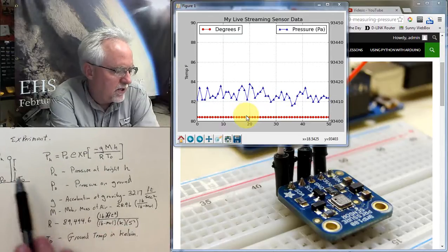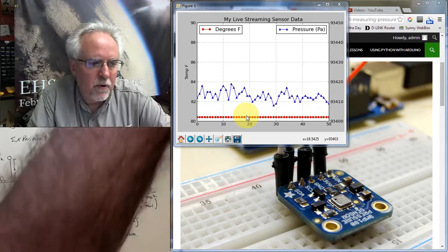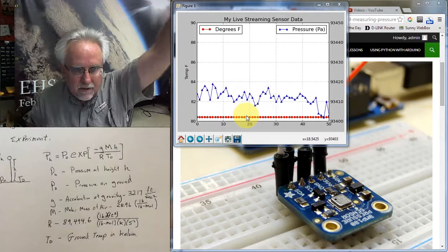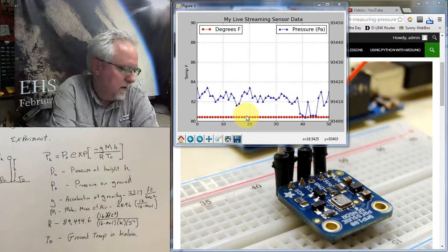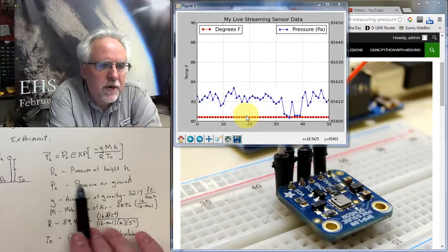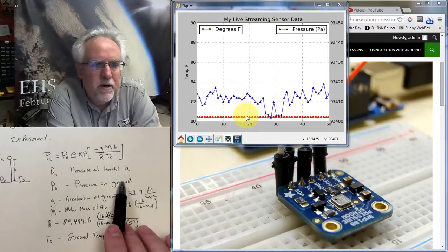pH is the pressure at the height. That would be when I hold the thing up here. P0 is the pressure on the ground, or for me, the pressure on the floor.